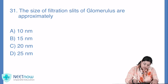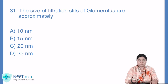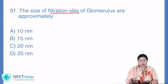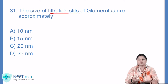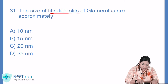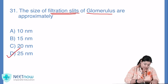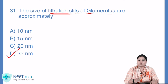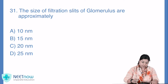The size of filtration slits of glomerulus is approximately. Options are: 10 nm, 15 nm, 20 nm, or 25 nm. The answer is option D — 25 nm. You are right.